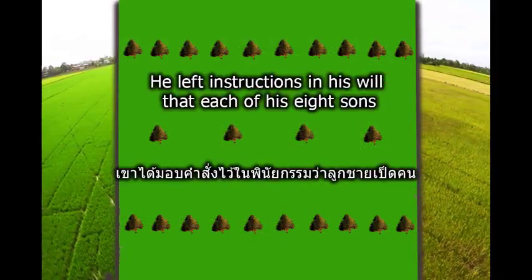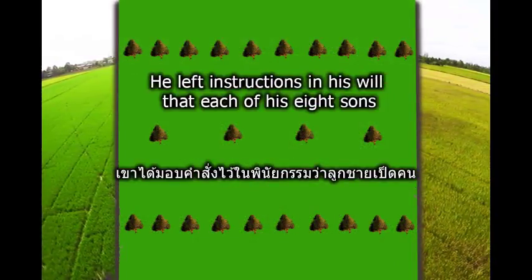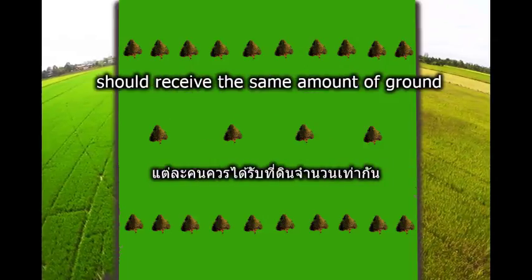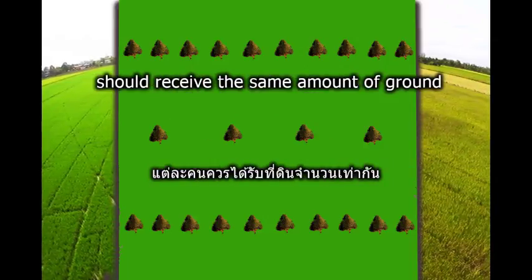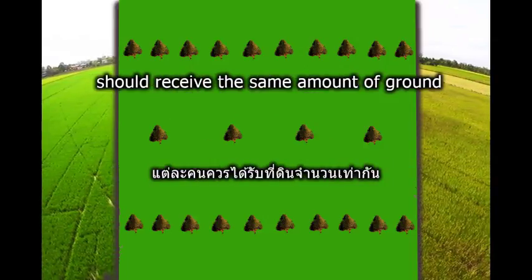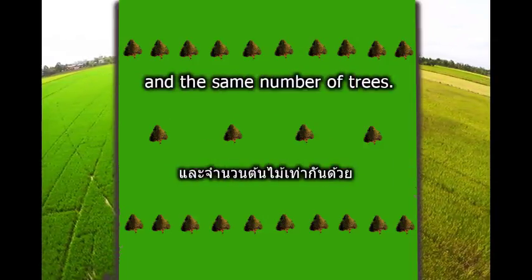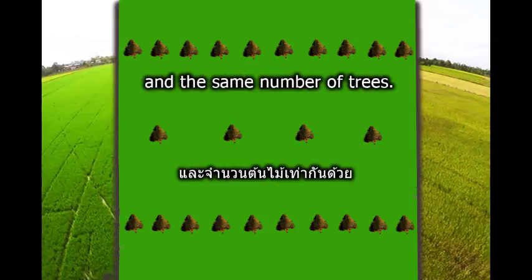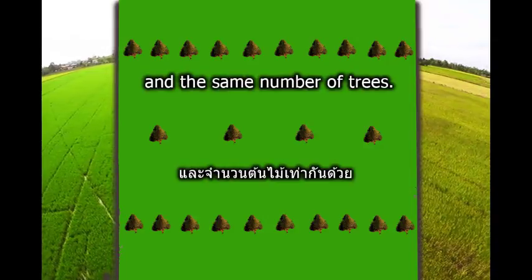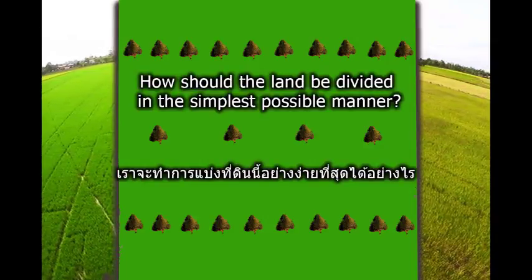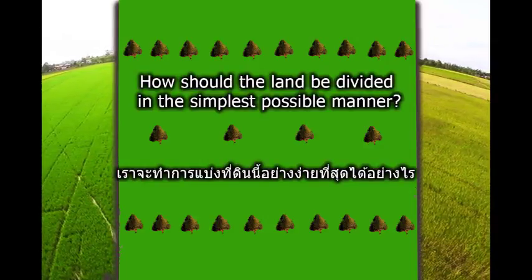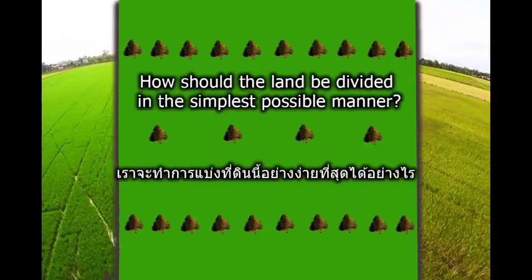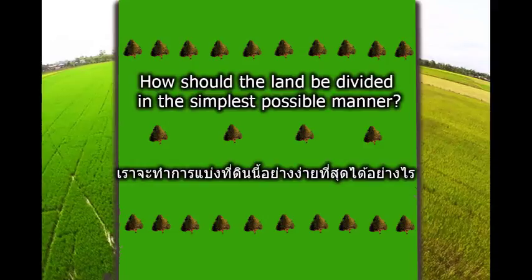He left instructions in his will that each of his eight sons should receive the same amount of ground and the same number of trees. How should the land be divided in the simplest possible manner?